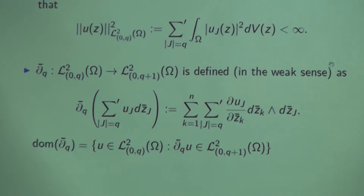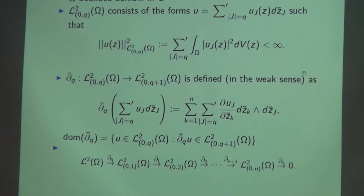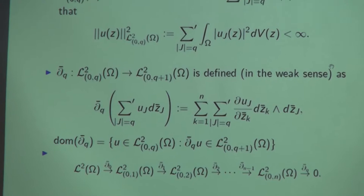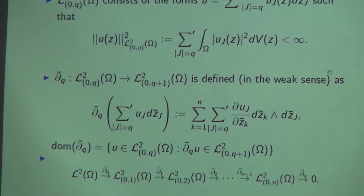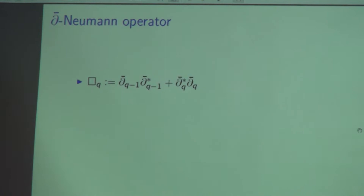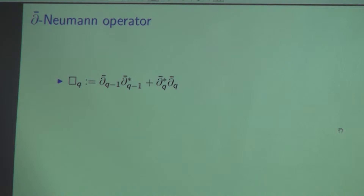D-bar defines a complex — the so-called Dolbeault complex — on the space of (0,q)-forms. Because the D-bar operator is linear, densely defined, and closed, it has a Hilbert space adjoint, which we denote D-bar_q^*. It's also linear with domain dom(D-bar^*). We define the complex Laplacian box_Q to be the composition of D-bar and D-bar^*. If you feed box_Q with a (0,q)-form u, one part goes to the next level and the other part goes to the previous level, and then with D-bar^* and D-bar you go back and forth.